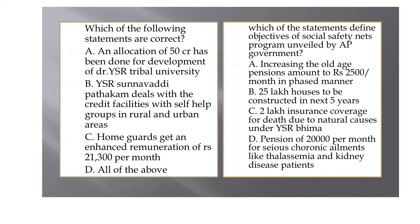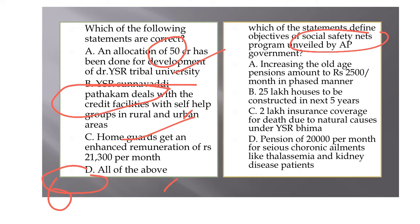This slide covers scheme allocations and social security. The answer is all of the above: YSR Tribal University gets a 50 crore allocation; Sunna Vaddi Patakam provides credit facilities for rural self-help groups and women; home guards' remuneration is enhanced to 21,300. For social security: old age pension is being increased to 3,000 per month in a phased manner, currently increasing by 500 rupees at a time; 25 lakh houses will be constructed in 5 years; natural death insurance coverage is 1 lakh rupees; and pension of 10,000 — not 20,000 — is provided to thalassemia and kidney patients.